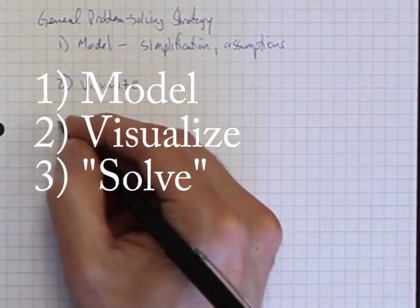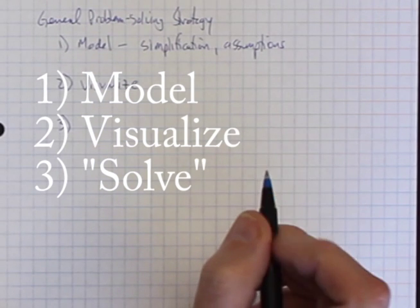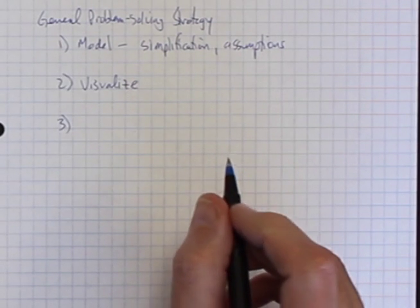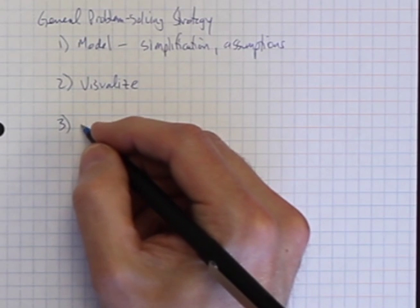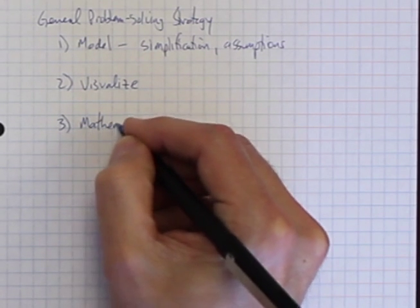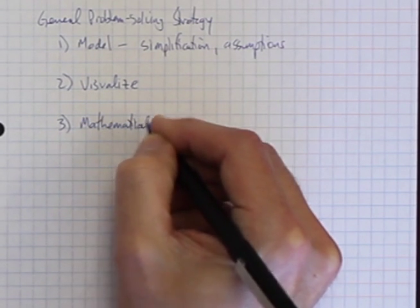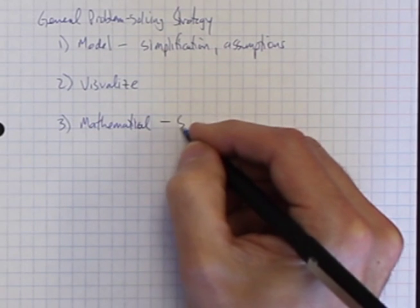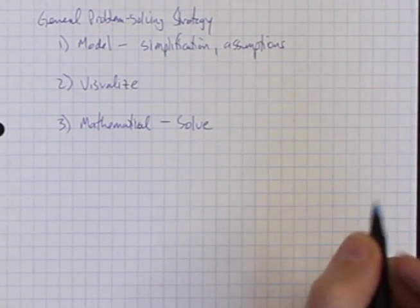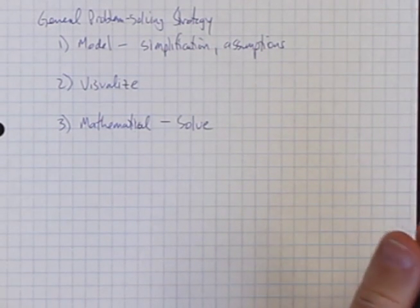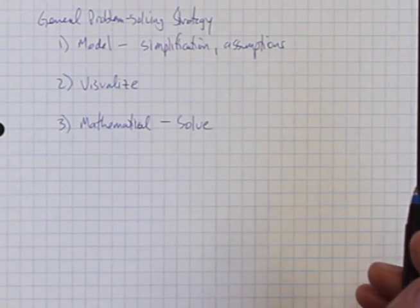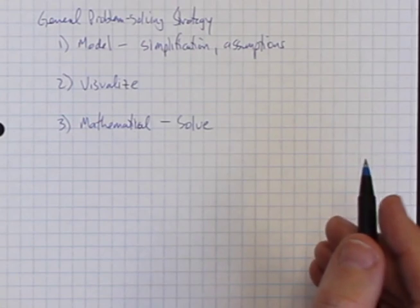The third step after we've sketched the picture and gotten a handle on what's happening is then to create some kind of mathematical representation. And in this case, we're going to then use that mathematical representation to solve for some kind of formula that describes mathematically the motion or the dynamics of the physics of the problem. Then the last piece of the problem-solving strategy is to assess.